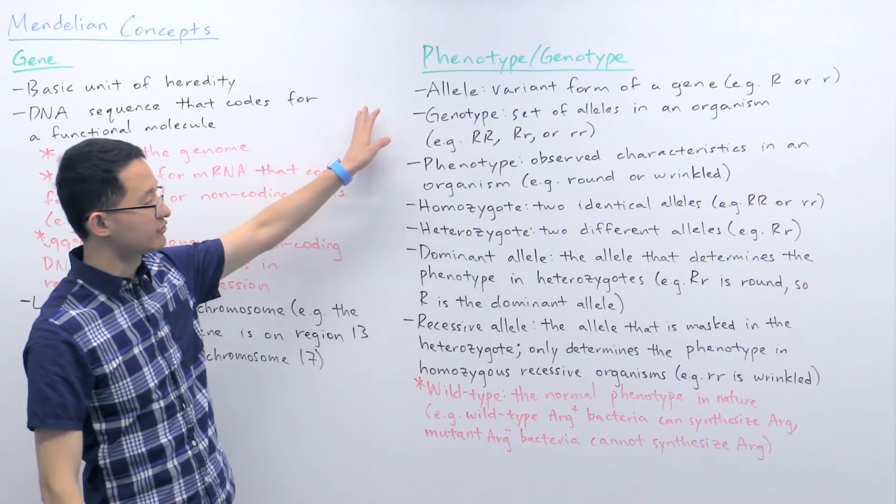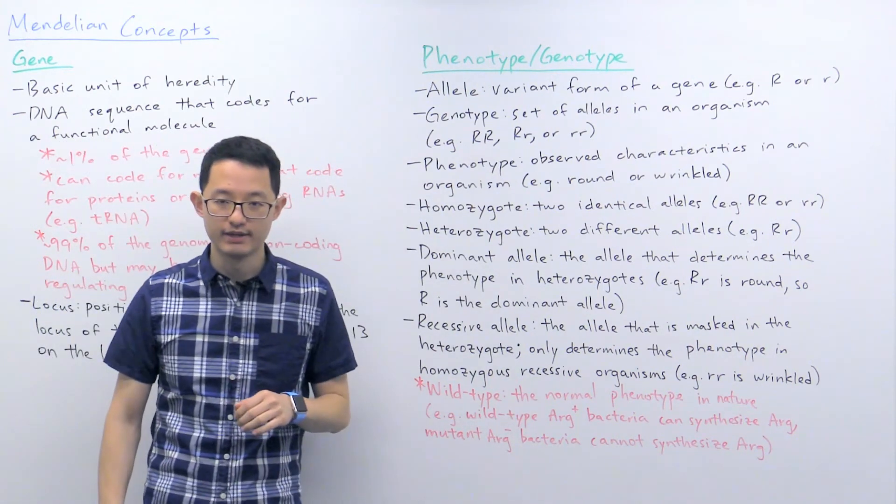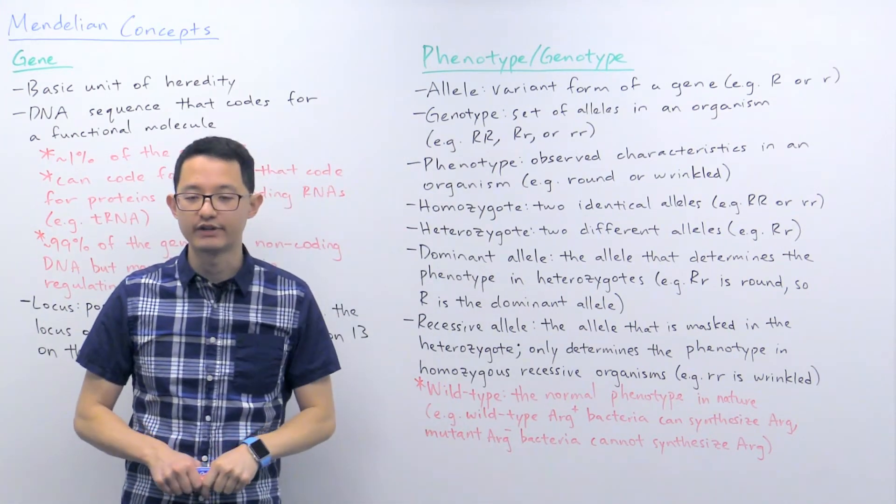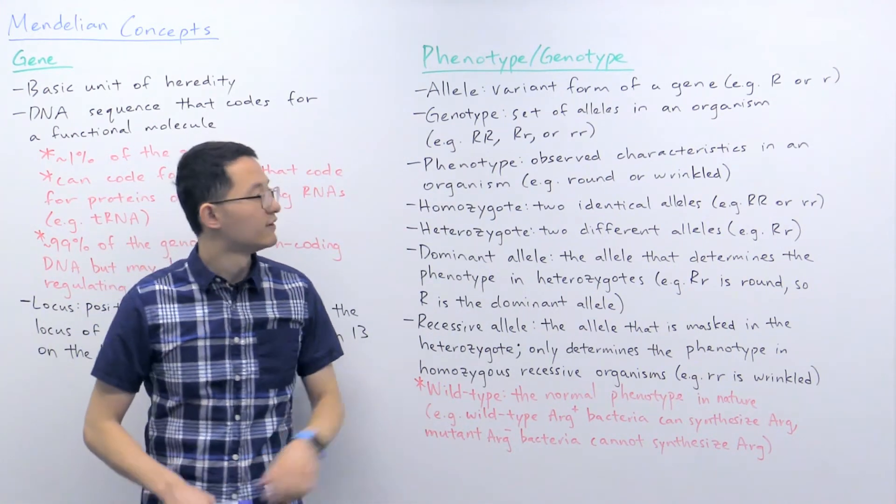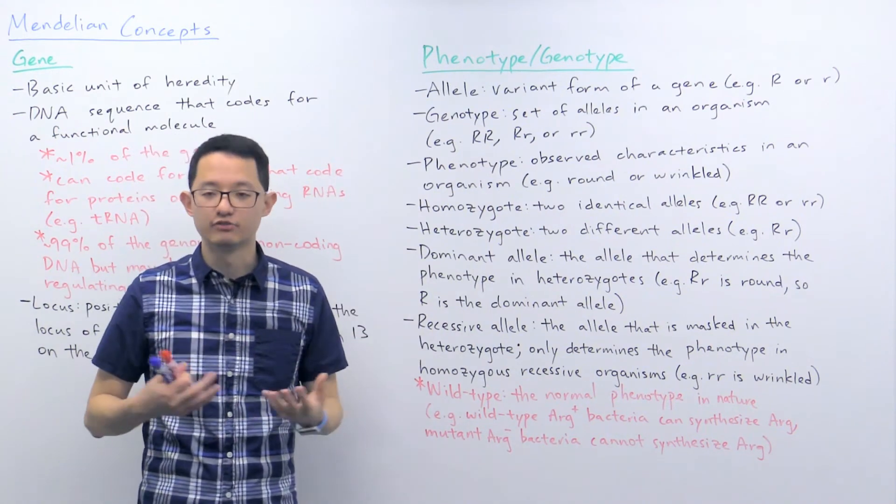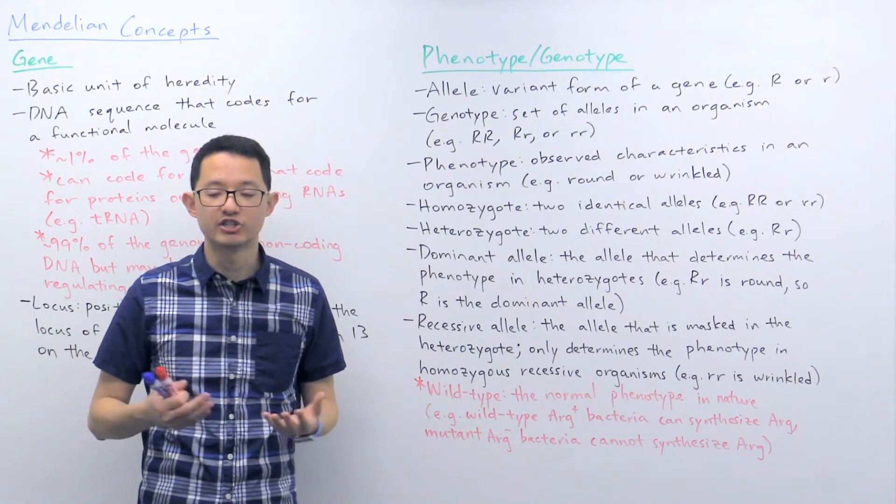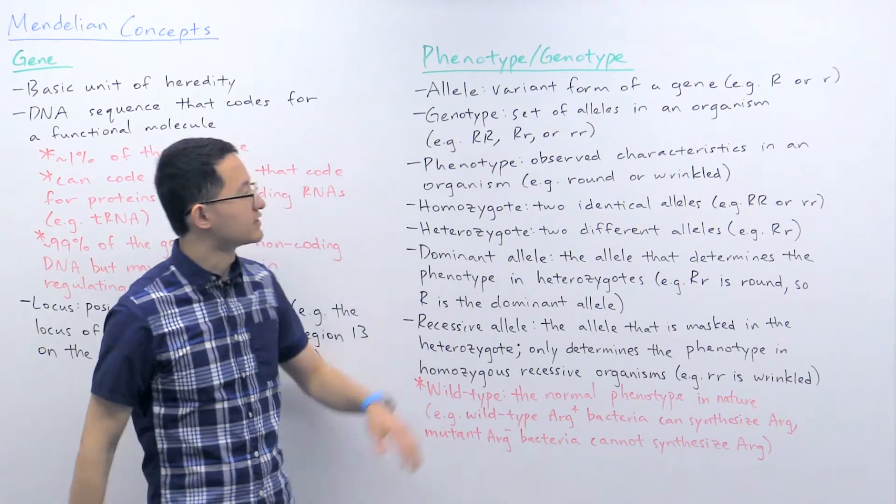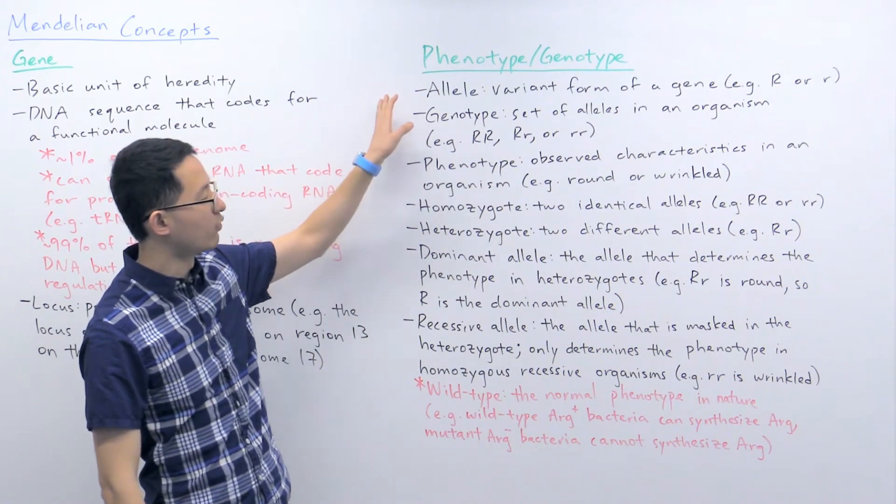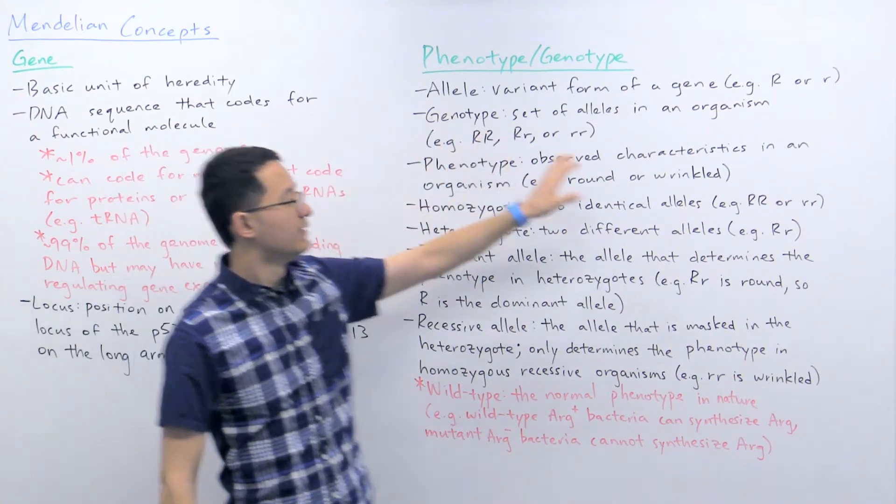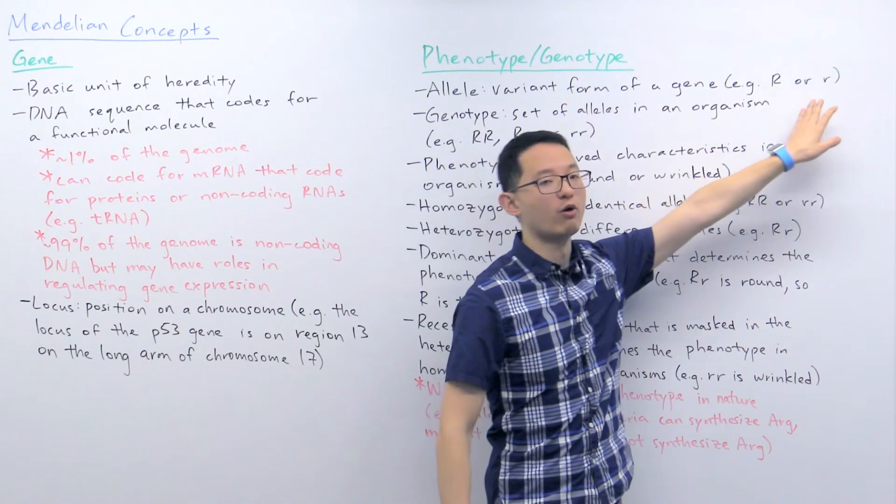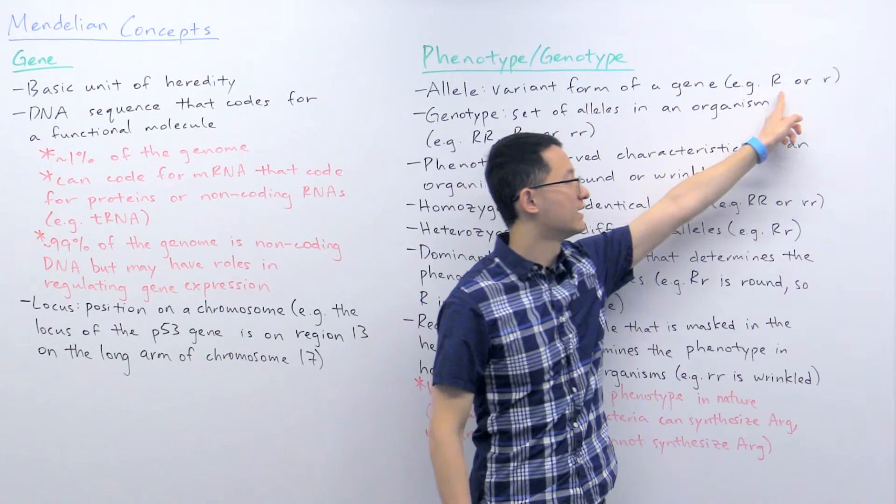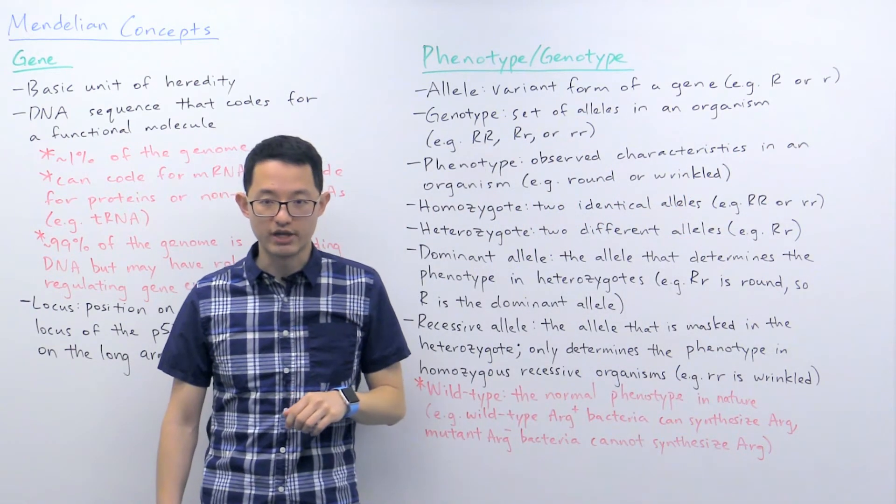So next, let's look at phenotype as well as genotype. So first of all, we can talk about alleles. Alleles are the different variant forms of a gene. For example, we can consider some of Mendel's studies where he was looking at the shape of peas, that they could be round or wrinkled. This is because there are two alleles for the shape of a pea seed, which is big R or little r. Big R referring to the round shape and little r referring to the wrinkled shape.